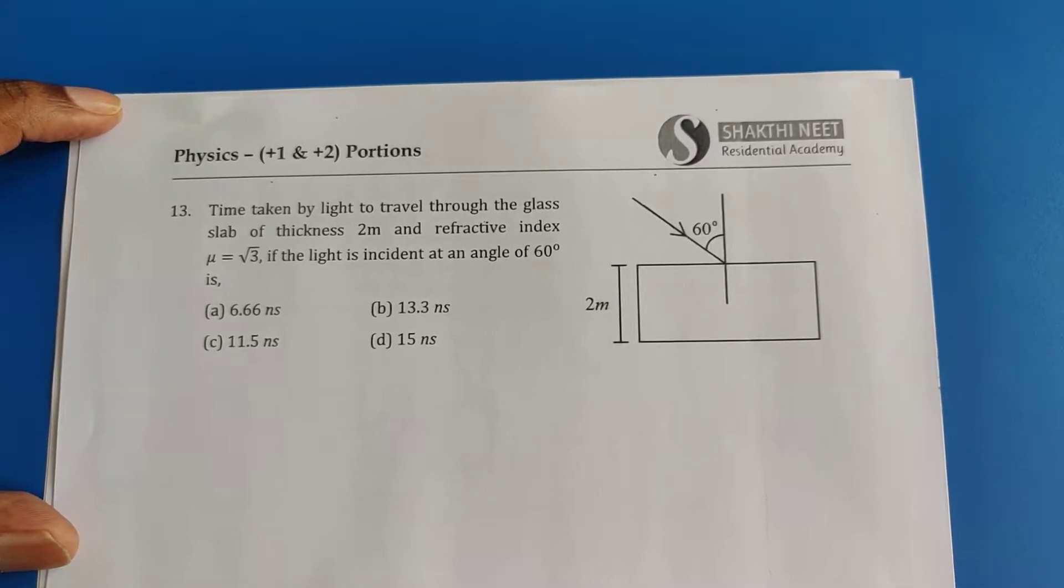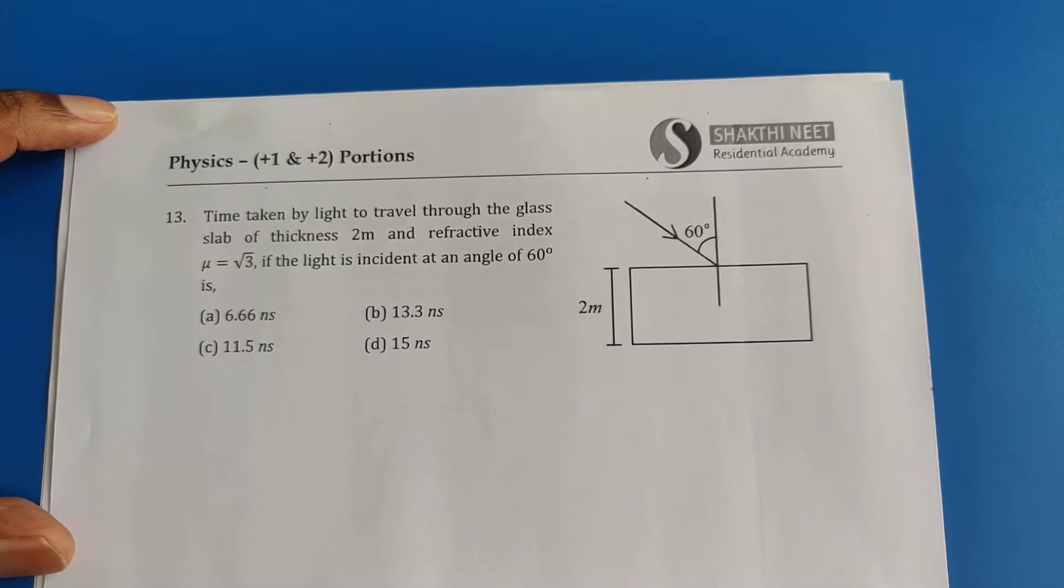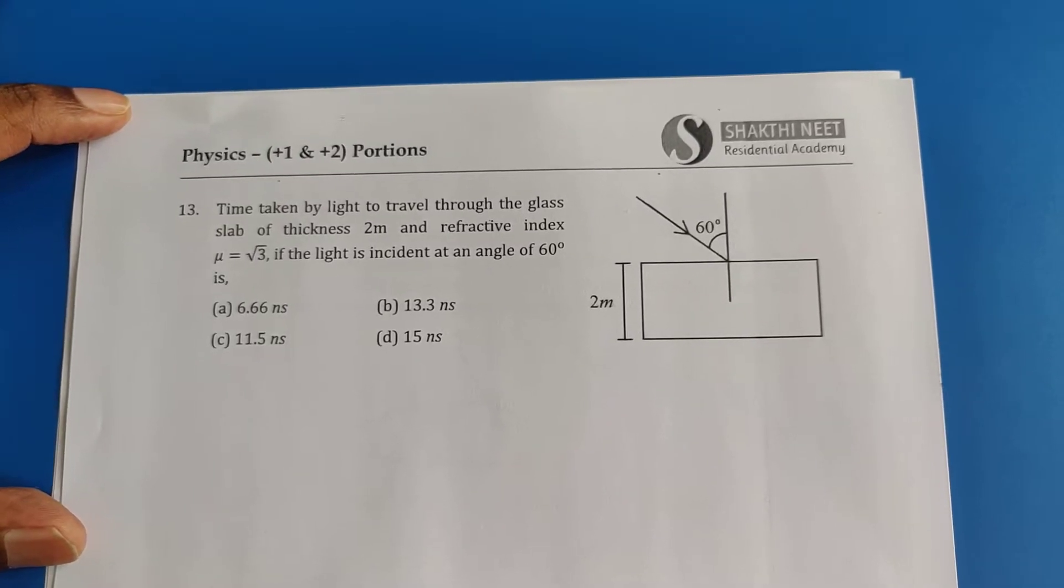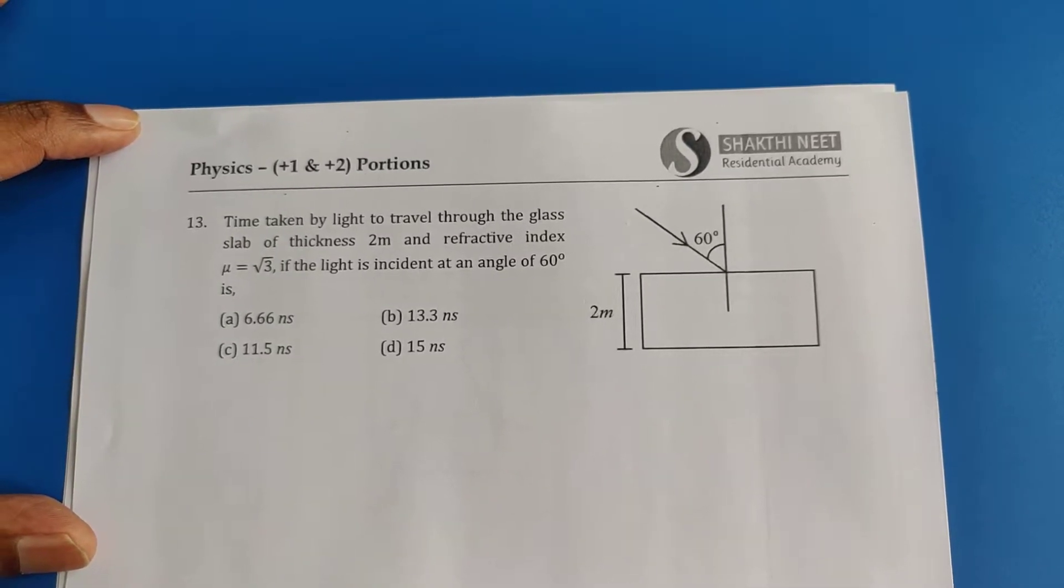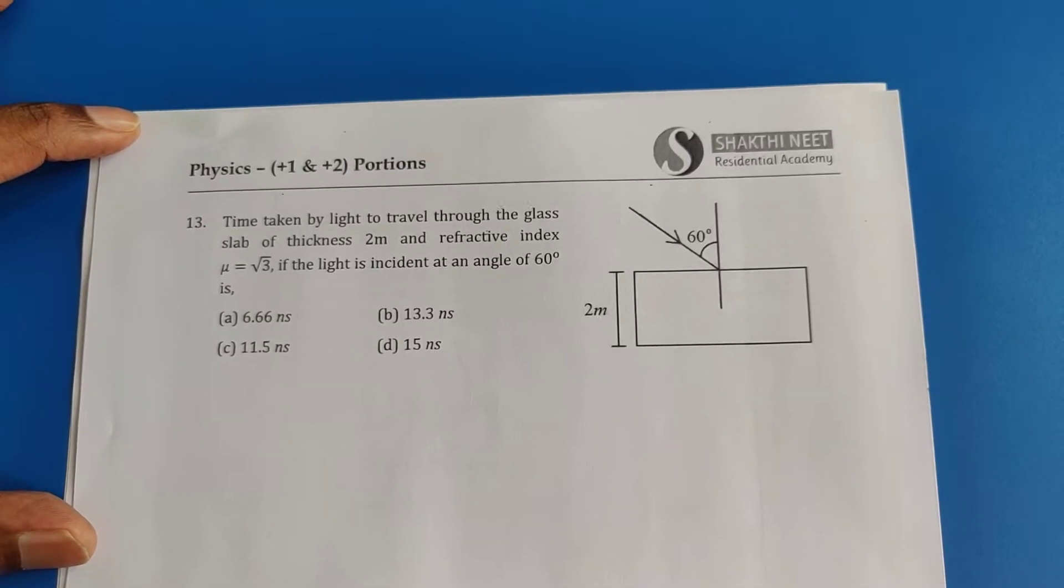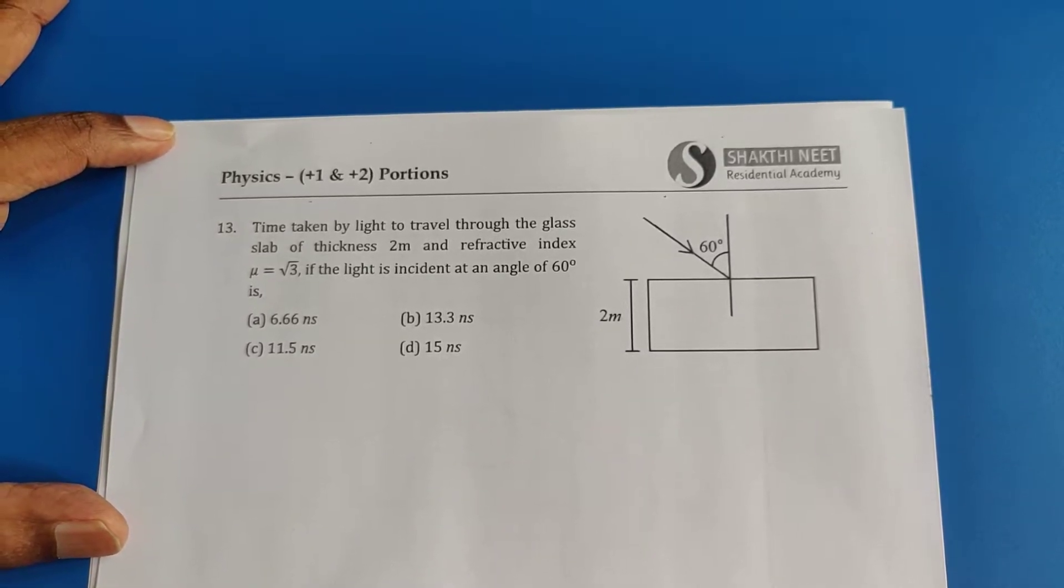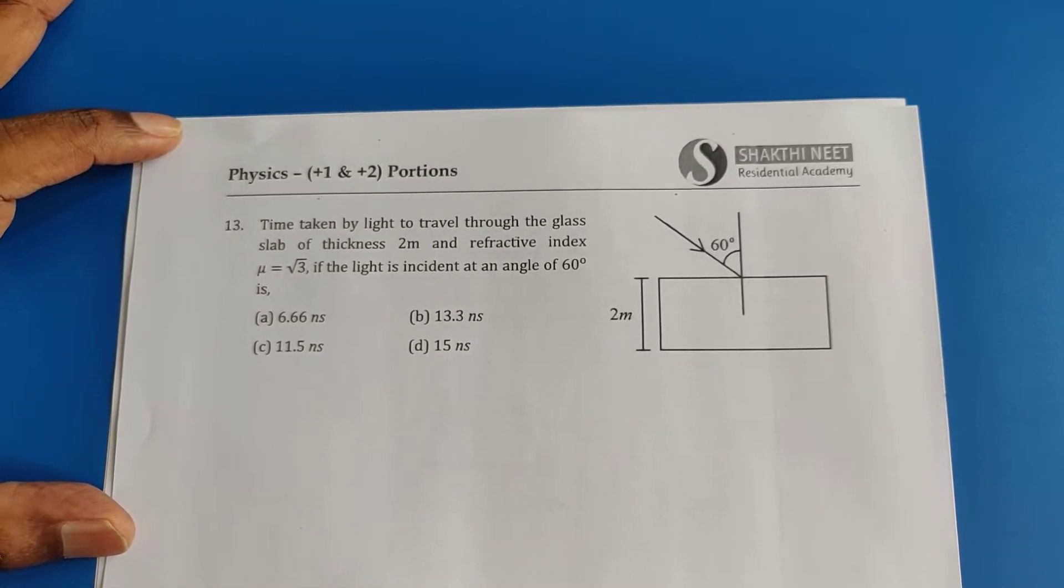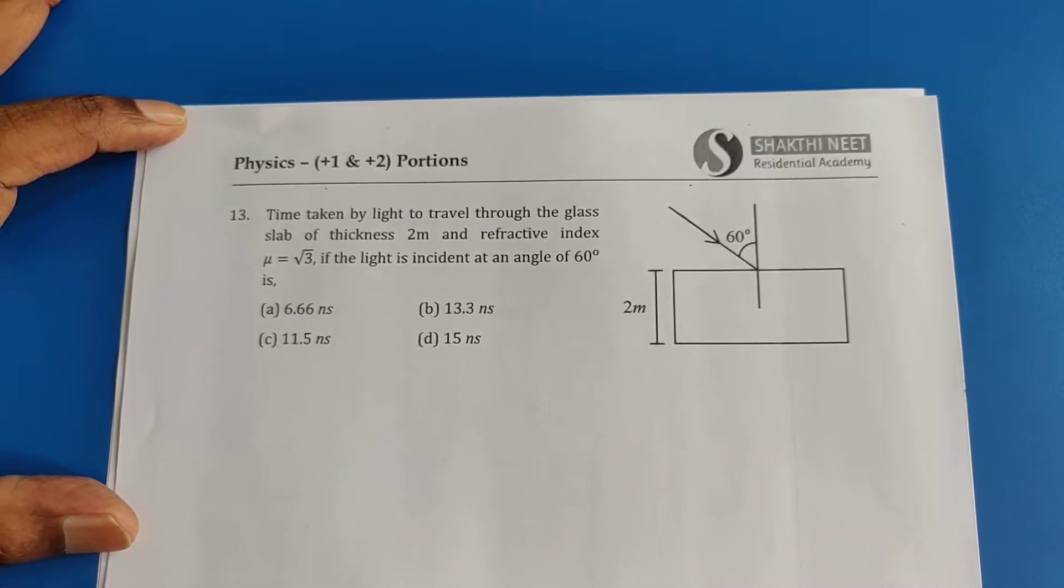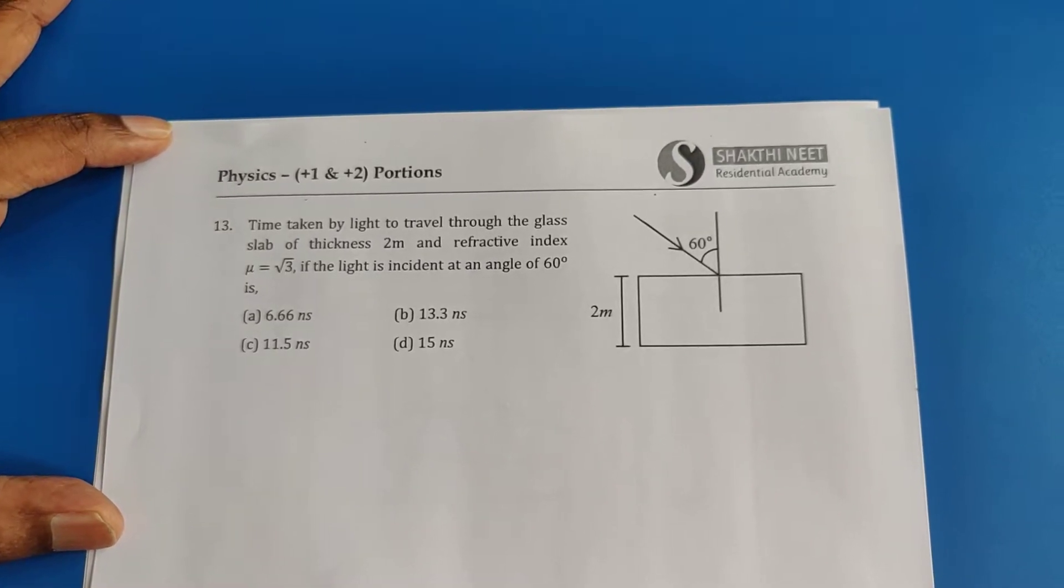See this question. This is a glass slab. Light is incident at 60 degrees. The thickness is shown as 2 meters. Let us see the question. Time taken by light to travel through the glass slab of thickness 2 meters, the refractive index is μ equal to root 3, if the light is incident at an angle 60 degrees. That is the question.